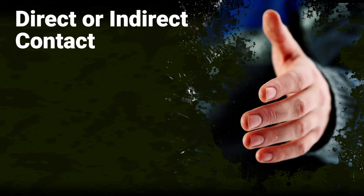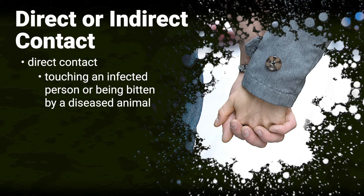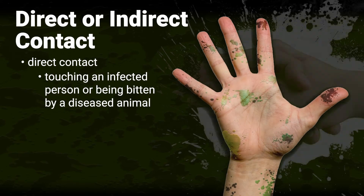Direct or indirect contact. Direct contact means that germs from one person are passed along to another person. Transmission can be from touching another person — germs from a sick person can transfer onto their hands during coughing and sneezing, and then be passed along to other individuals by skin contact like a handshake. Unwashed hands after using the bathroom can cause the spread of germs, such as the bacteria E. coli.